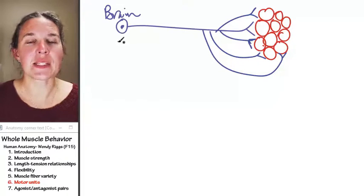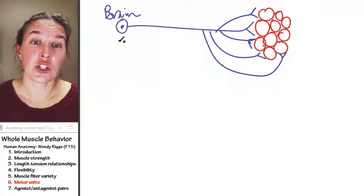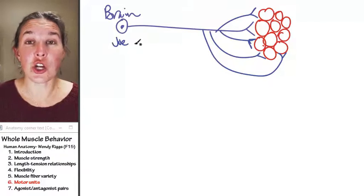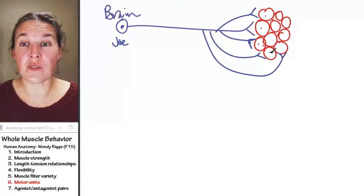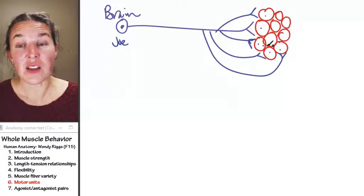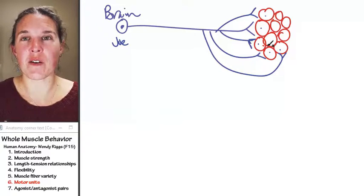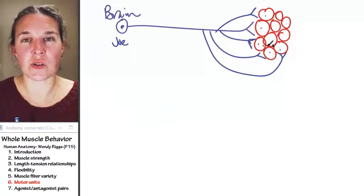So the brain says, okay, Joe, Joe, the neuron, please activate one, two, three, four, five myofibers. And all five of those myofibers are going to contract. The brain knows that if we activate Joe, we're going to get five myofibers.